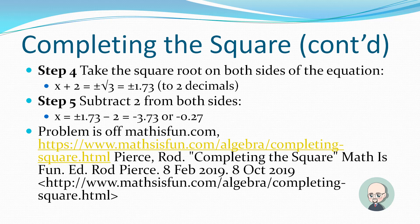Step four: take the square root of both sides. x plus 2 equals plus or minus the square root of 3, which is plus or minus 1.73. Subtract 2 from both sides: 1.73 minus 2 gives negative 0.27, and negative 1.73 minus 2 gives negative 3.73.